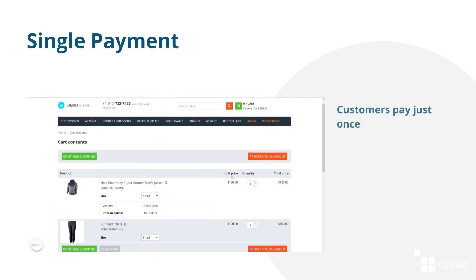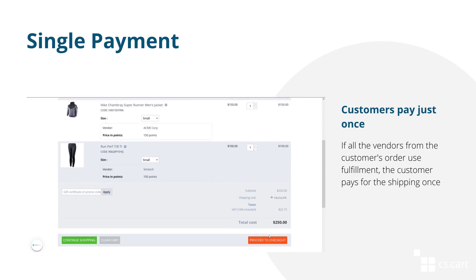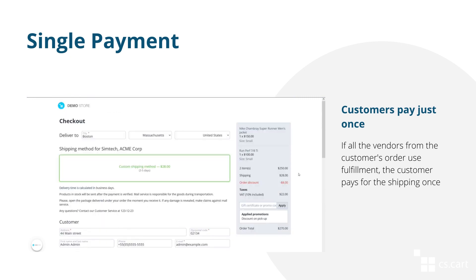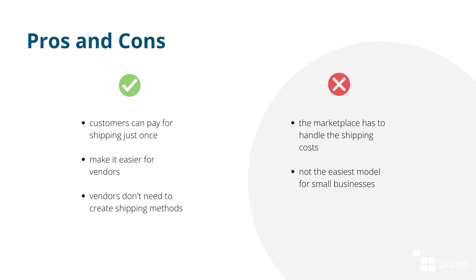The important benefit of fulfillment is that customers can select a single shipping method for multiple vendors at checkout and don't have to pay for the shipping several times, even if they have products from different vendors in the order.